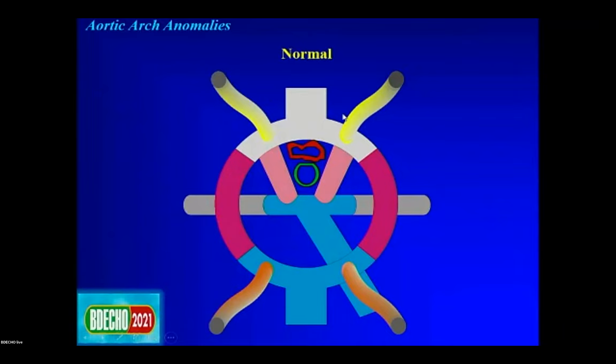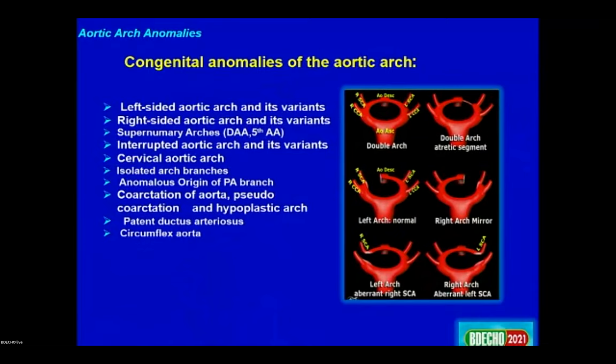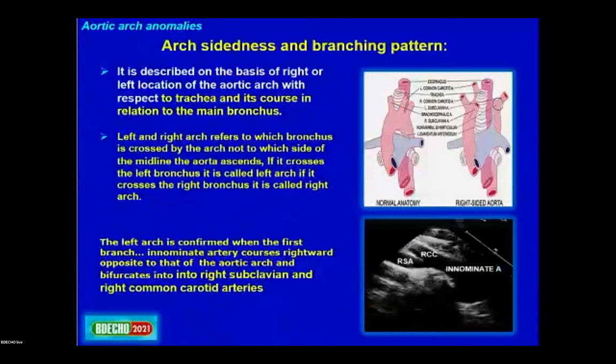The right dorsal aorta disappears, giving us the normal left aortic arch. Congenital anomalies of the aortic arch include: left aortic arch and its variants, right aortic arch and its variants, supernumerary arches, double aortic arch, interrupted aortic arch, anomalous origin of the pulmonary artery, and coarctation of the aorta. The arch is described based on whether it is right or left with respect to the trachea.